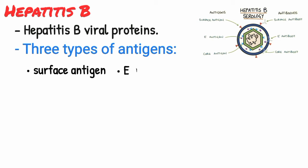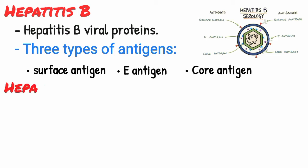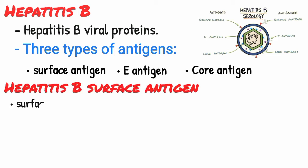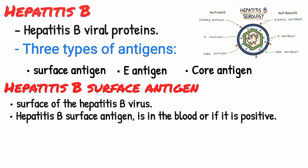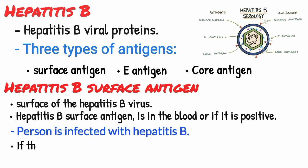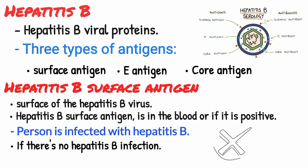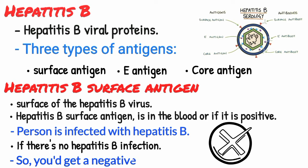There are three types of antigens on the hepatitis B virus: the surface antigen, E antigen, and the core antigen. The hepatitis B surface antigen is found on the surface of the hepatitis B virus. If we find that the hepatitis B surface antigen is in the blood, or if the hepatitis B surface antigen is positive, then we know that the person is infected with hepatitis B virus. If there's no hepatitis B infection, the virus wouldn't be releasing the surface antigen into the blood, so you get a negative result.